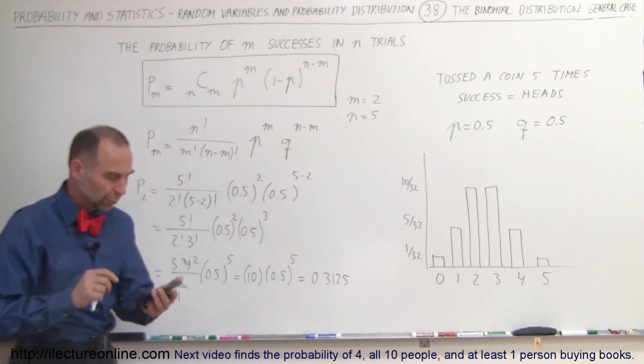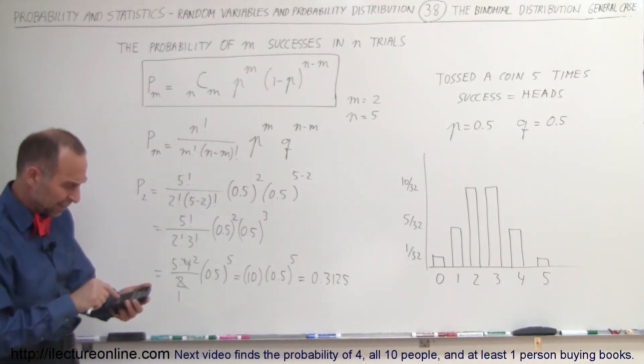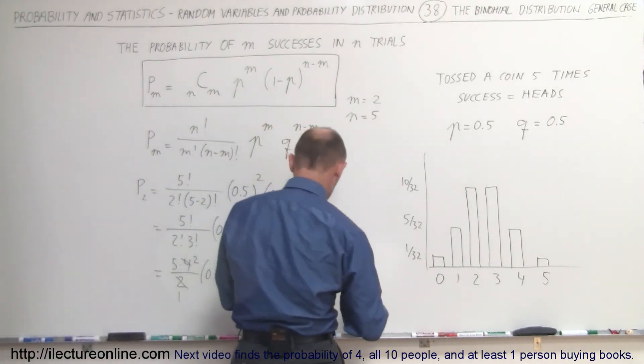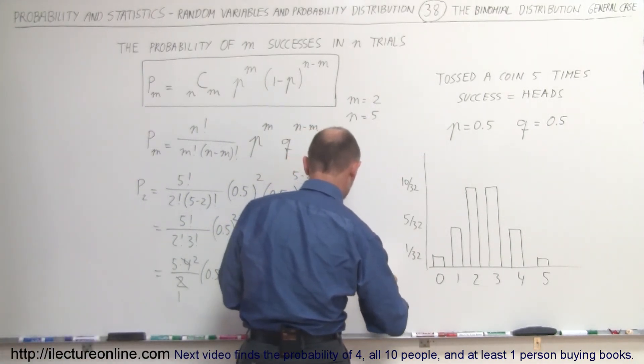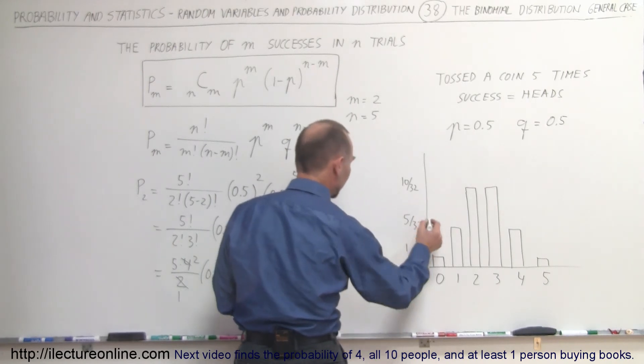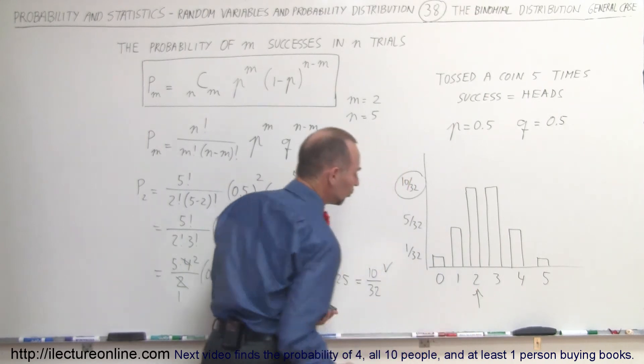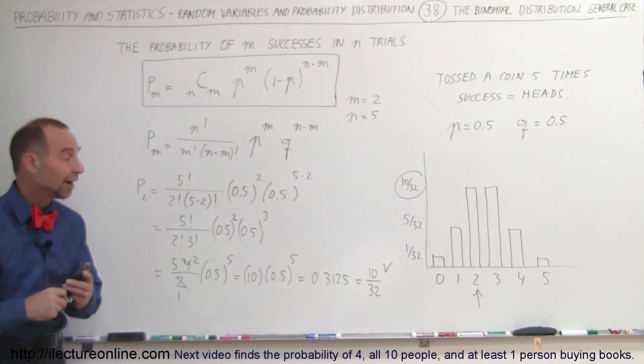If we put that into a fraction form, you can find out by getting the inverse button and that would be equal to 10 divided by 32, which is the same answer that we got over here when we looked for two successes when we flip a coin five times.